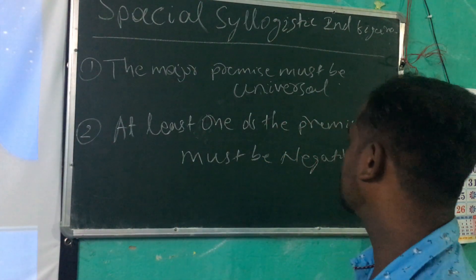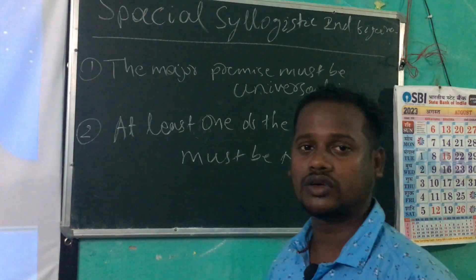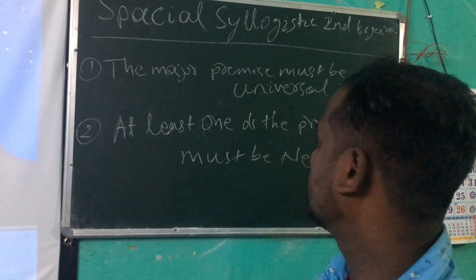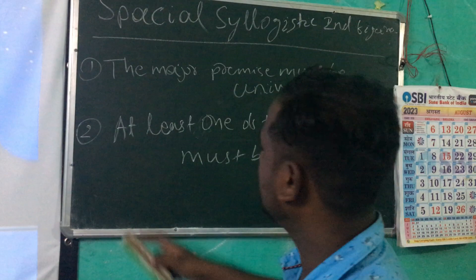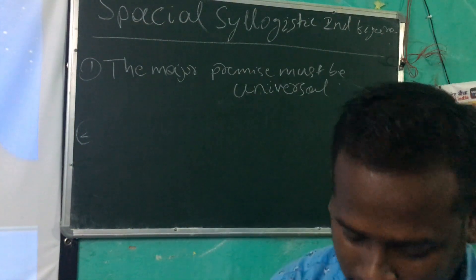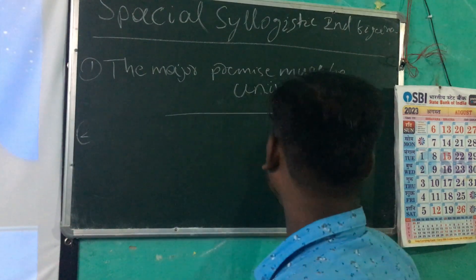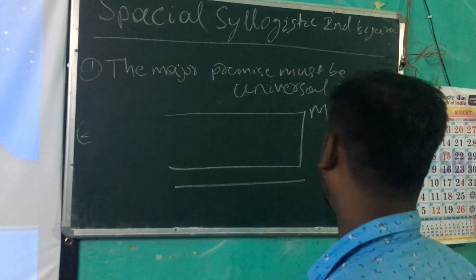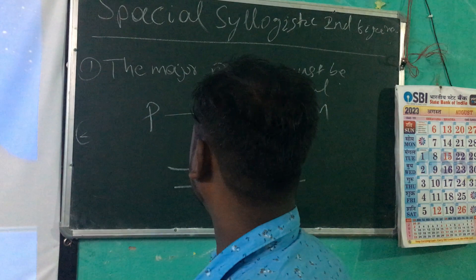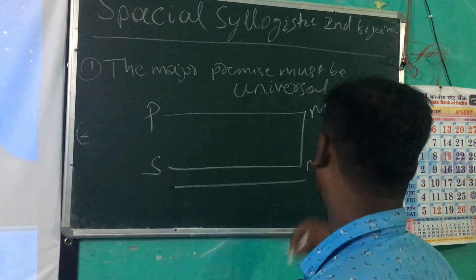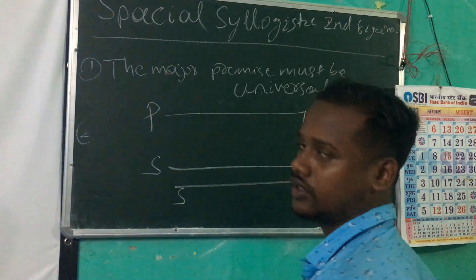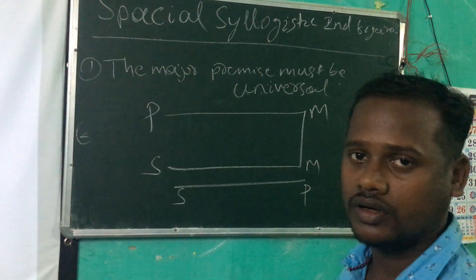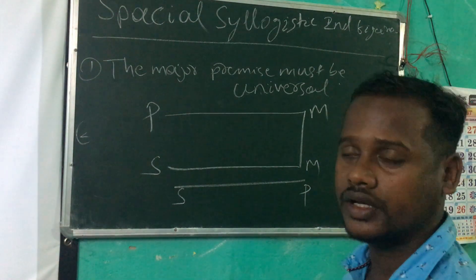So, the first rule — I will now prove. First rule proves that in the second figure, the major premise must be universal. What is the second figure? In the second figure, the middle term occurs as the predicate part in both the premises. S is minor term, M is middle term, P is the predicate term.